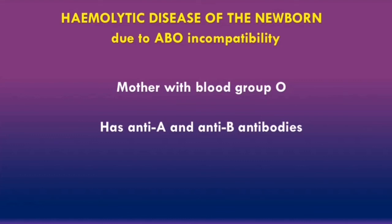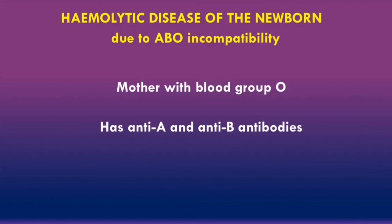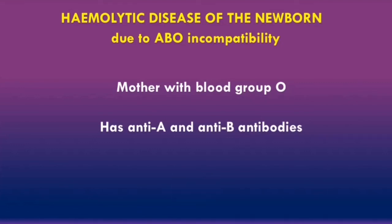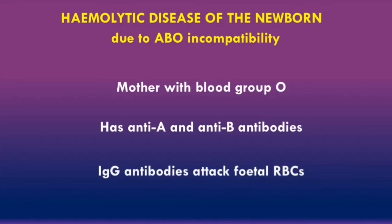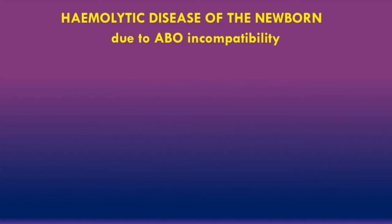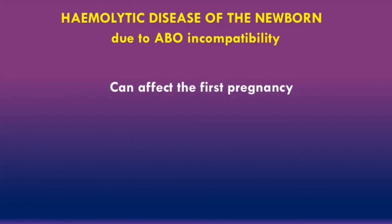These anti-A and anti-B antibodies are usually IgM, so they are not able to cross the placenta and attack the fetal red blood cells. However, occasionally the body can produce IgG anti-A and anti-B antibodies, and these IgG antibodies can cross the placenta and attack the fetal red blood cells causing hemolysis. A key point is that this disease can affect the first pregnancy, as the mother does not need to be sensitized to the A or B antigens and naturally has anti-A and anti-B antibodies.